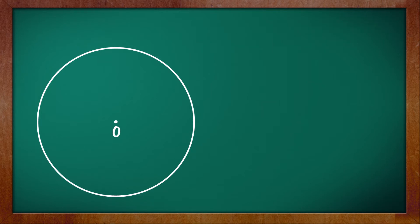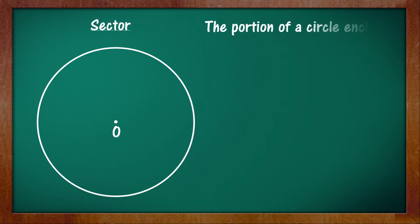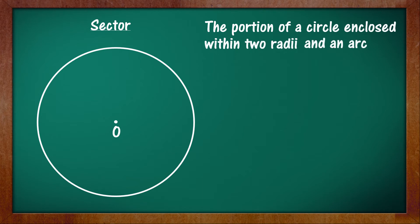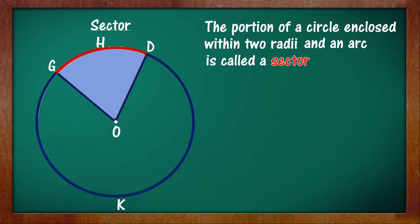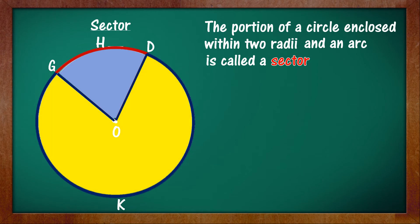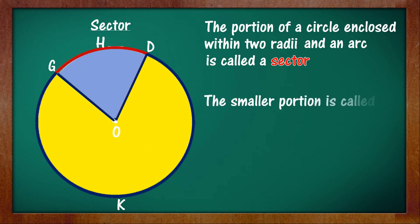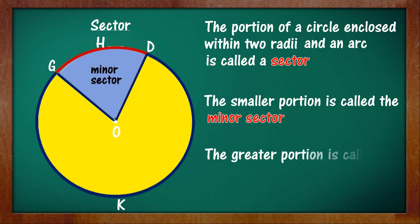Next we will learn about a sector. The portion of a circle enclosed within two radii and an arc is called a sector. For example, if OD and OG are the two radii of the circle, then the portion lying within the radii OD and OG and the arc GHD is a sector, or the portion lying within the radii and the arc GKD is also a sector. The smaller portion enclosed within the radii and the smaller arc GHD is called the minor sector, and the greater portion is called the major sector.